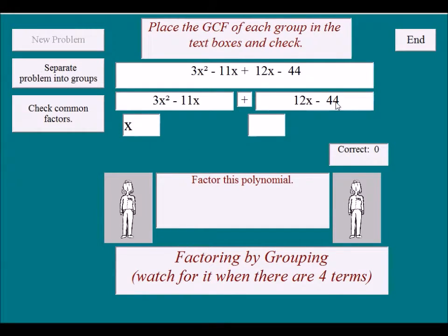Now I'm looking at 12 and 44. 44 is 4 and 11, and then 4 can go into 12, so this looks like it's 4. And then we'll check the common factors of each group.